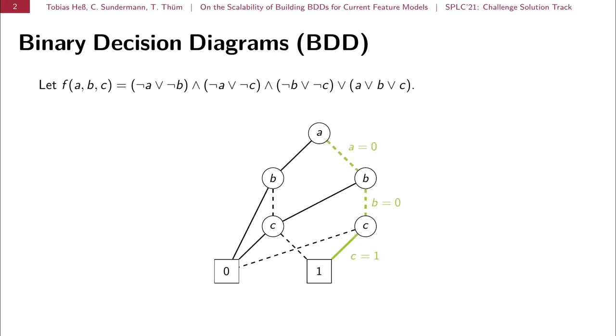If we have a path from the root node to the 1 terminal, then this always denotes a satisfying assignment. So we can quickly check that the selection of a as false, b as false and c as true will satisfy every clause of the Boolean function above and thus satisfy the function f.